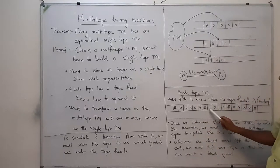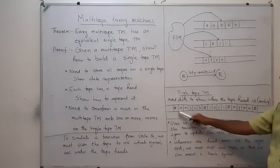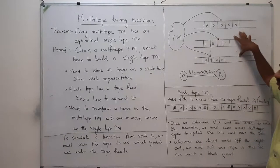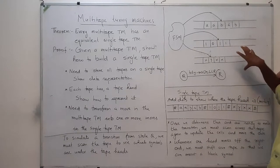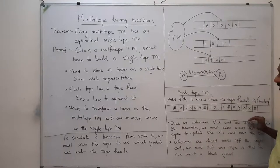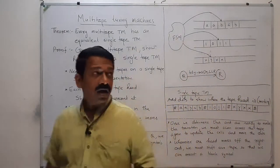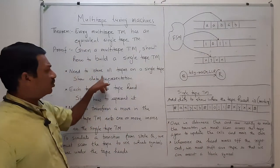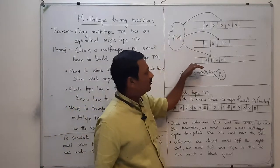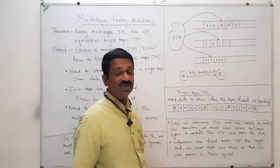The first tape data — A, A, B, A, B — is stored here; the second tape data — 1, 0, 1, 1 — is stored here; and the third tape data — X, Y, X, X — is stored here. These three sections are delimited by hash symbols. All the information stored in the three tapes is stored in a single tape, and hash is the delimiter symbol.